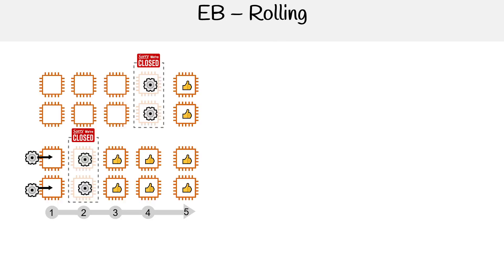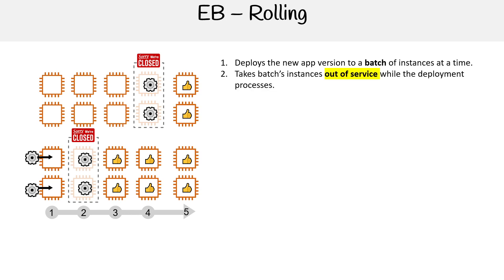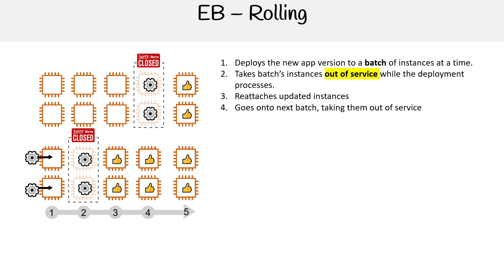Our next deployment policy is rolling deploys. Here's our big diagram — it deploys the new app version to a batch of instances at a time. It takes a batch of instances out of service while the deployment is processing, then reattaches and updates those instances, goes on to the next batch, takes them out of service, reattaches those instances, and rinses and repeats.